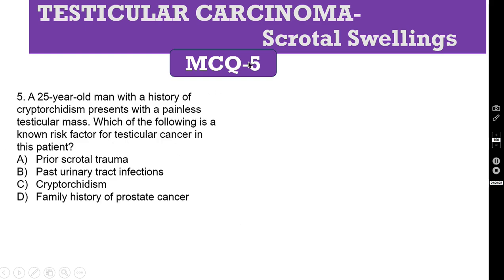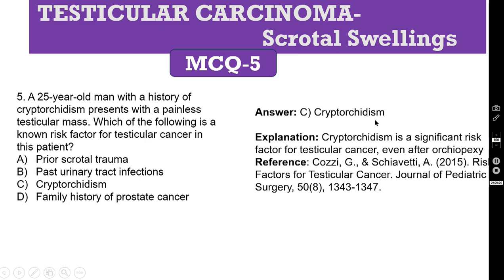MCQ 5. A 25-year-old man with a history of cryptorchidism presents with a painless testicular mass. Which of the following is a known risk factor for testicular cancer in this patient? A. Prior scrotal trauma. B. Past urinary tract infection. C. Cryptorchidism. D. Family history of prostate cancer. The correct answer is cryptorchidism — undescended testis. Cryptorchidism is a significant risk factor for testicular cancer. Even after orchidopexy it can turn malignant. There are two problems: one is malignancy, and another is infertility due to decreased sperm production.